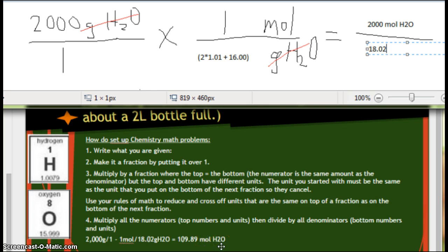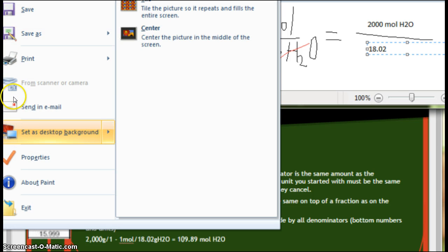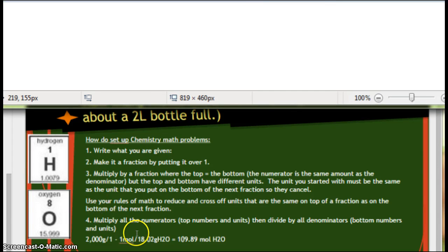When you put that into your calculator, you're going to get 109.89 moles of water. So in other words, if you have a 2-liter bottle full of water, you have almost 110 moles. That's kind of a good way to think about it. And if I wanted to know how many particles that was, how many atoms that was, well then I would do what we did before.